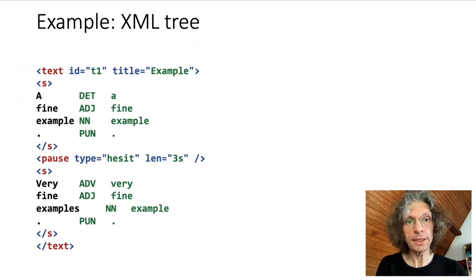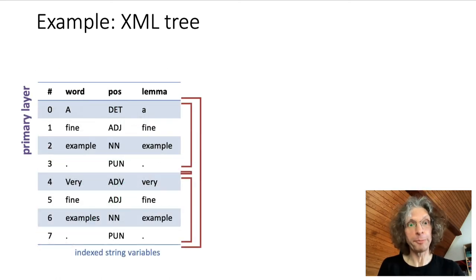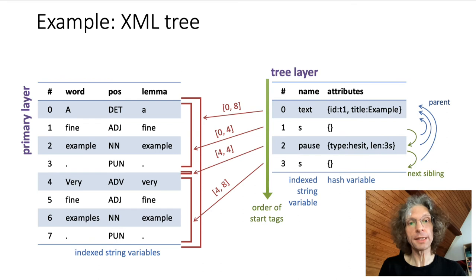A second example is a tree of XML elements here representing text structural information, including the empty element pause in the middle. Again, the token sequence translates into a primary layer with several variables for its annotations. The XML elements are stored in a tree layer in their natural ordering and linked to the corresponding spans in the primary layer. The tree layer has an indexed string variable for the element names and a hash variable for all the attribute-value pairs in the start tags.